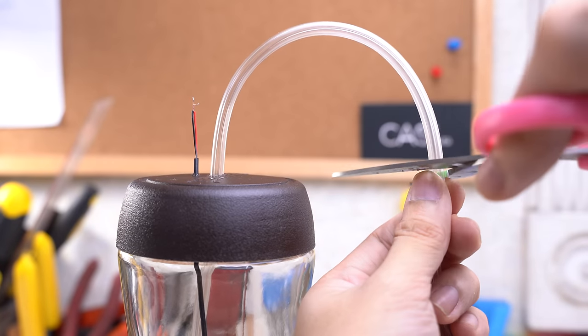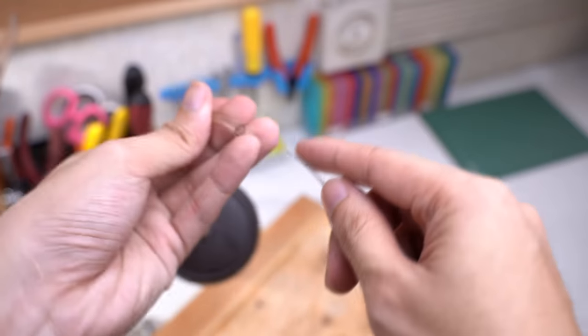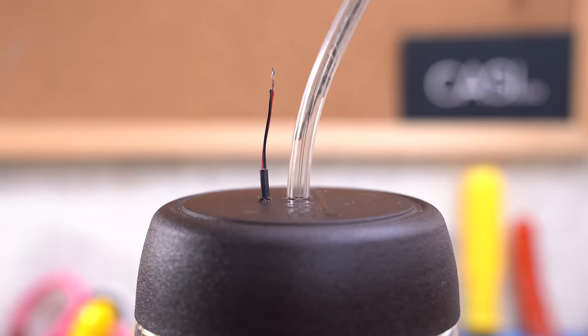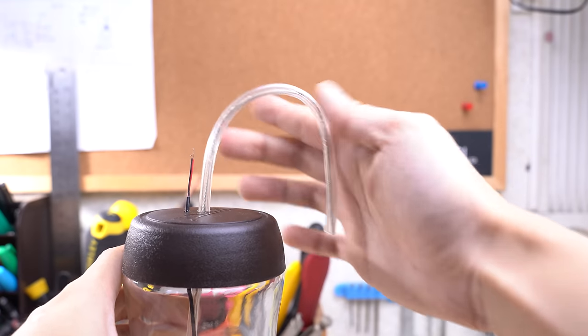To prevent your tube from sagging, you might want to insert a bendable wire inside the tube. You can use copper wire or chicken wire. This way, you can adjust the position of your nozzle.